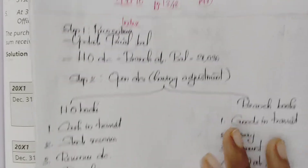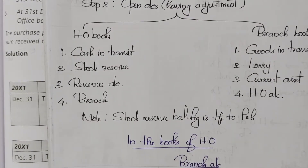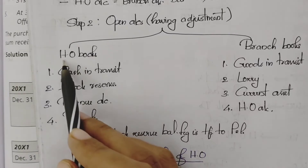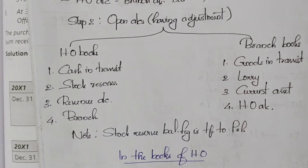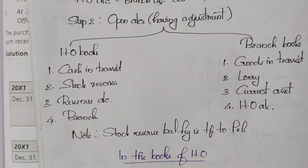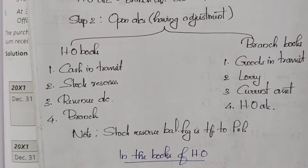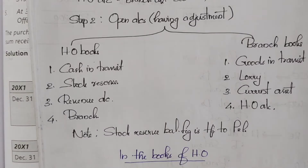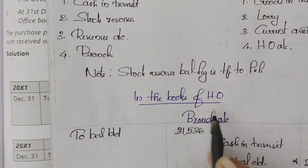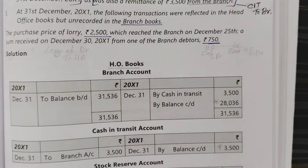We are going to go through the reconciliation entries and check which accounts need to be opened — just adjustment accounts. In the branch books: revenue account, stock reserve, cash in transit, goods in transit, lorry account. In the head office books: stock reserve, P&L account transfer, revenue account transfer, and head office account entries.